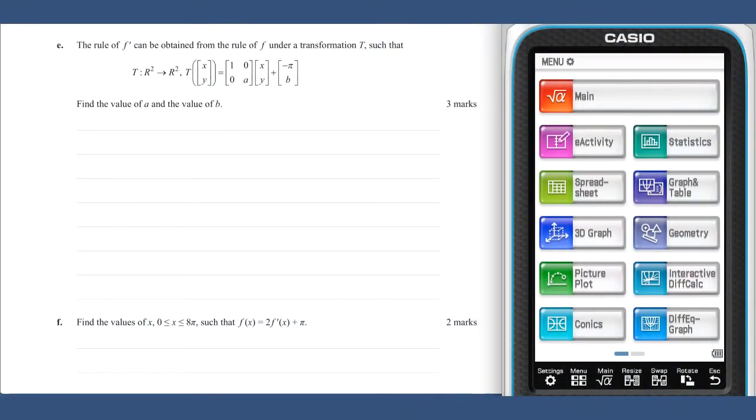Part E. The translation described has a dilation by a factor of a in the y direction, a translation of pi units in the x direction and a translation of b units in the y direction. This means that our expression for f dash could be f dashed x equals a multiplied by 2 cos of x minus pi over 2 plus pi plus b.